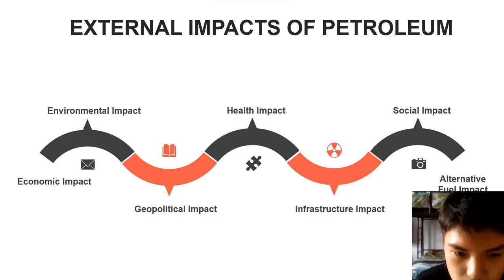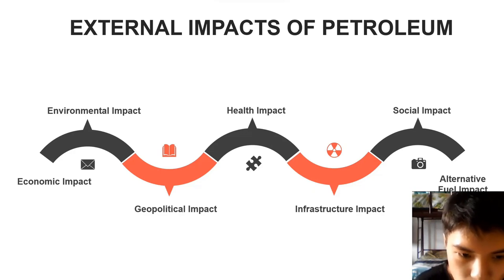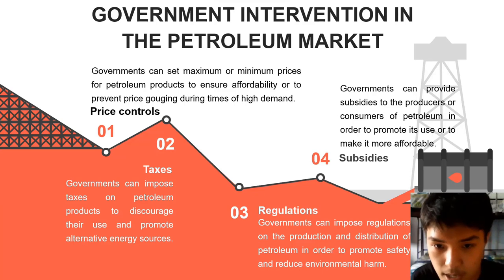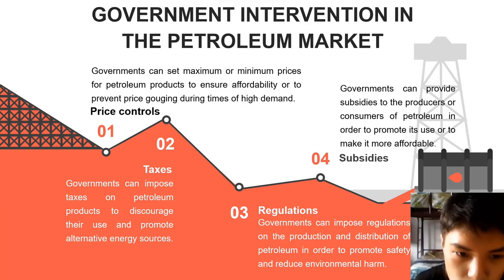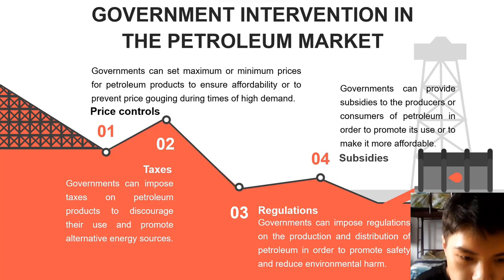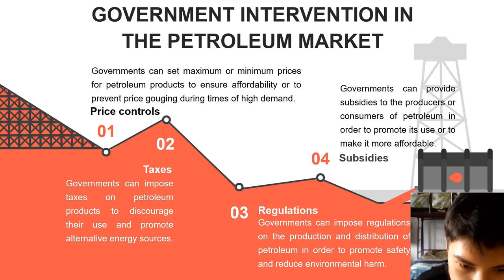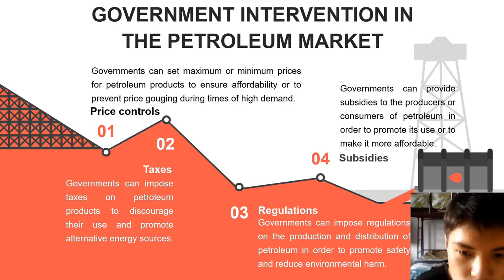Regarding geopolitical impact, significant geopolitical ramifications result from the management of petroleum reserves and production. Countries with major oil reserves have a big impact on politics and the economy. The government can intervene in the petroleum market in four ways. First, price control: the government can set minimum or maximum prices for petroleum products to ensure affordability during normal or high-demand times. Second, taxes: the government can impose taxes on petroleum products to discourage use and enhance the use of alternative energy sources. Third, regulation: the government can impose regulations on the production and distribution of petroleum to reduce environmental harm. Finally, subsidies: the government can provide subsidies to producers or consumers of petroleum to promote its use.